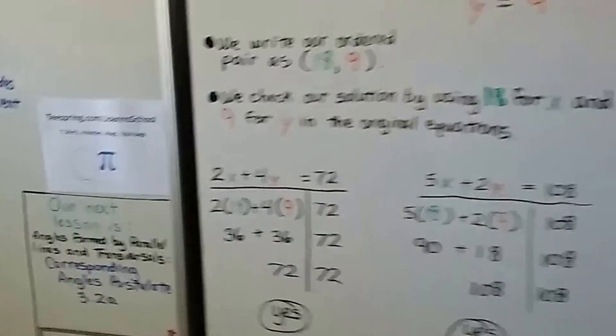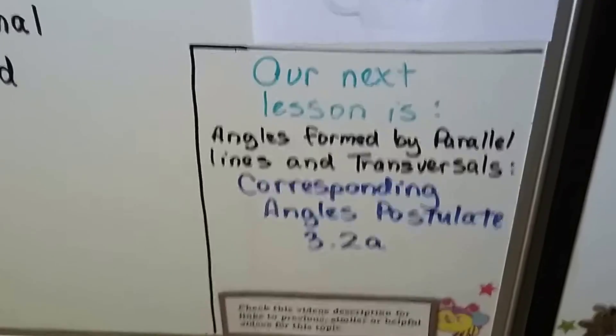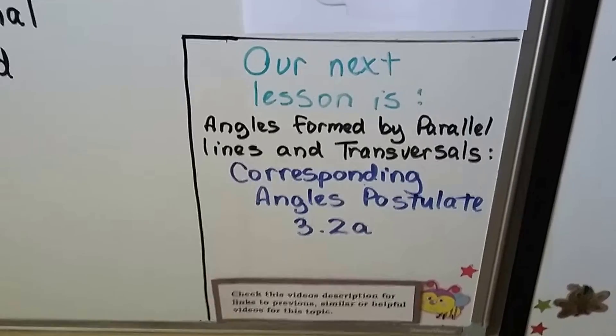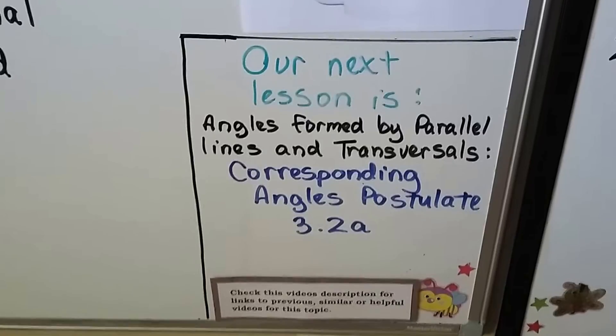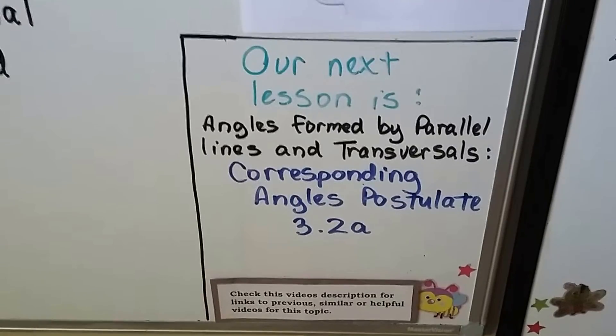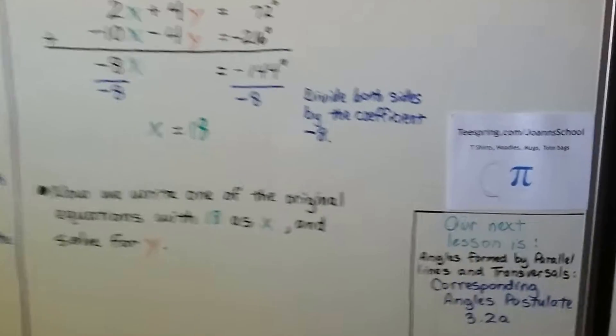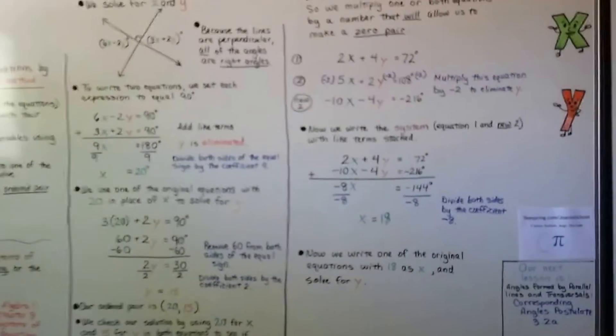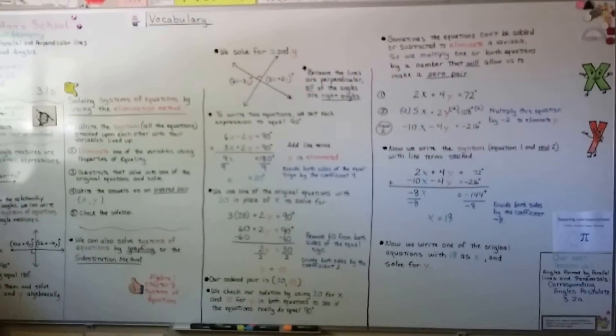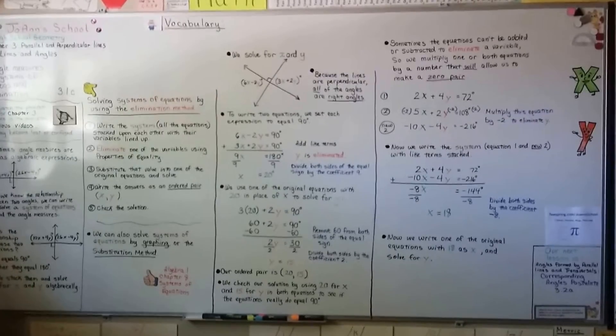So if this is still really confusing, you can go and watch that link of chapter 8, the systems of equations. You may not have to watch every single video in the chapter. Just the ones that will help you, because you'll see about graphing and substitution also. Our next lesson is angles formed by parallel lines and transversals. We're going to talk about corresponding angles postulate. That's 3.2a. I hope this was helpful. I know some of you just needed a little quick review, which is all right. It keeps you on track, doesn't it? I hope you're doing well. I hope you have a wonderful day. And I will see you next time.